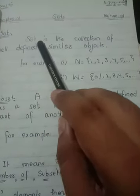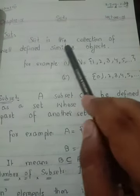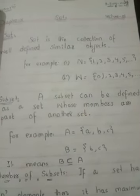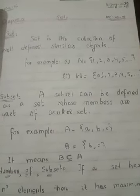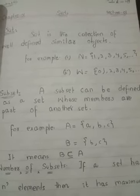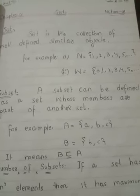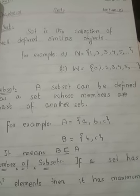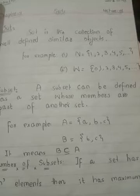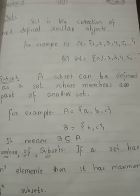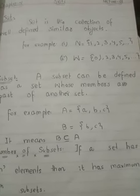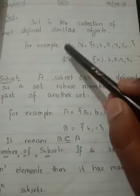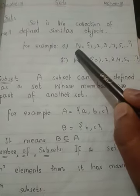Here is the definition of set: set is the collection of well-defined similar objects. Set is basically a collection but one thing must remember in your mind. Set must be well-defined and set must be of similar objects. If any collection does not fulfill these two criteria so it cannot be a set. For having a set it should be well-defined and it should be of same kind.